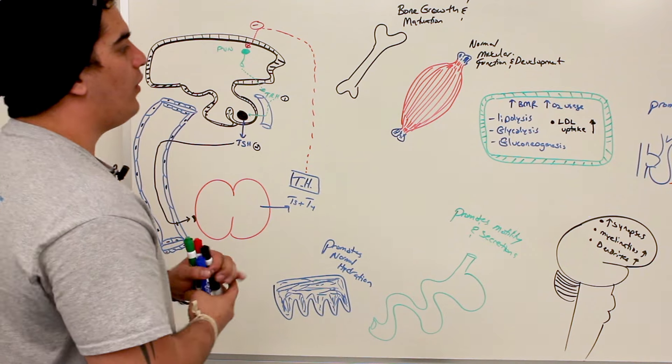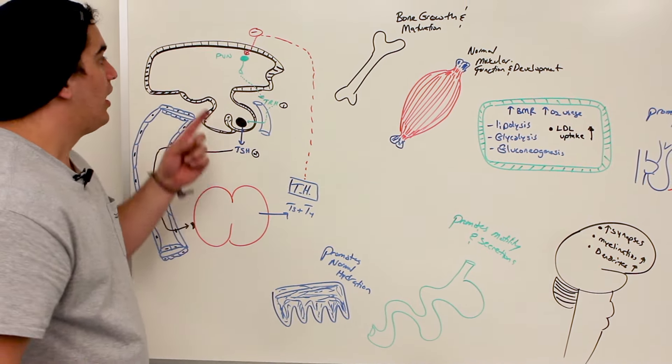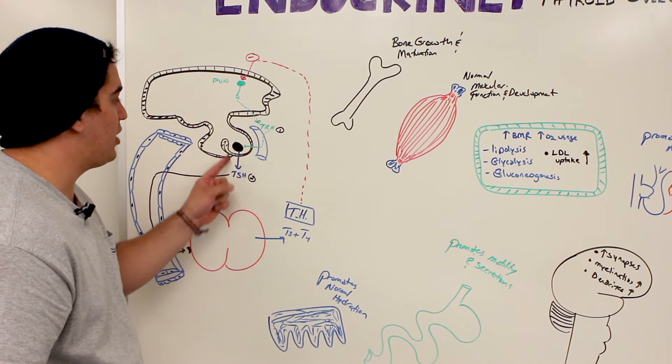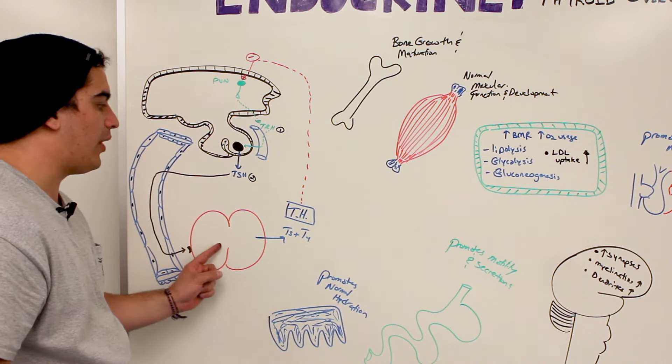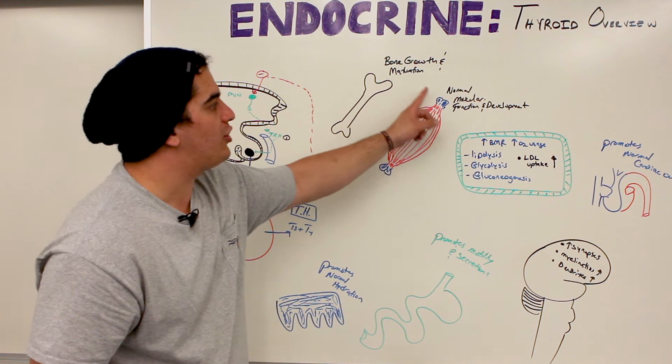So if we understand this, this is the basic overall function of thyroid hormone. So what happens? TRH is regulating the production of TSH by the anterior pituitary. TSH is acting on our thyroid gland to produce thyroid hormone. And thyroid hormone can produce bone growth and maturation.